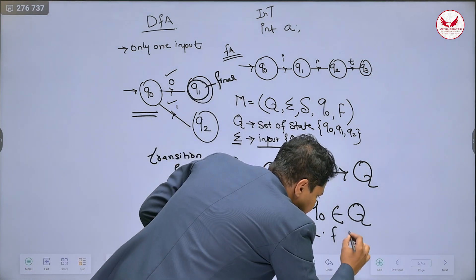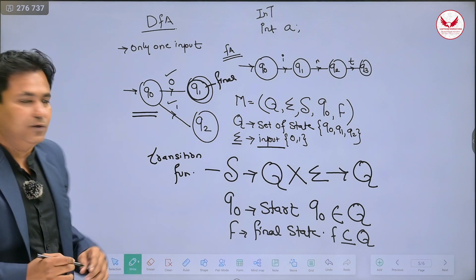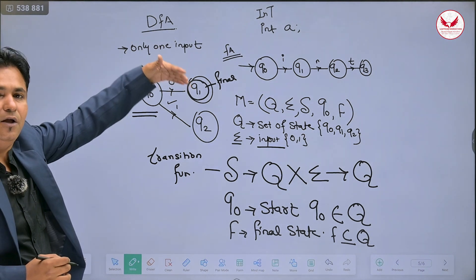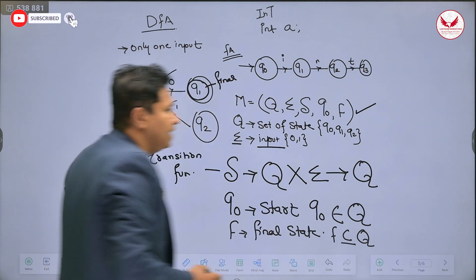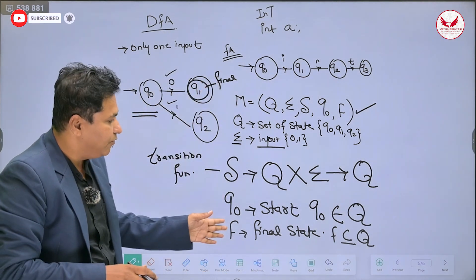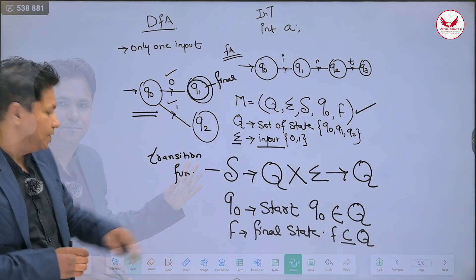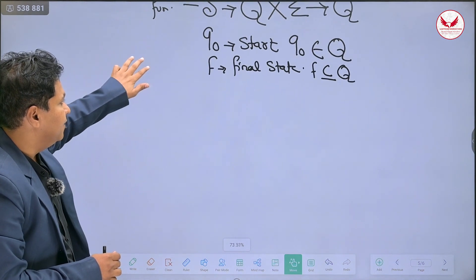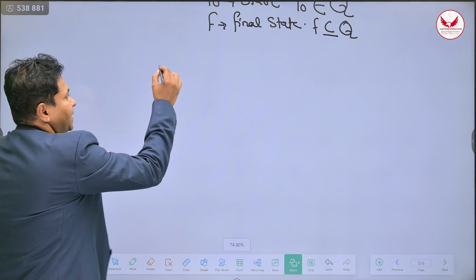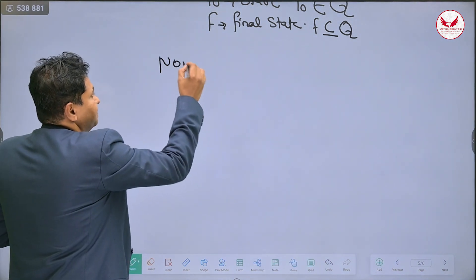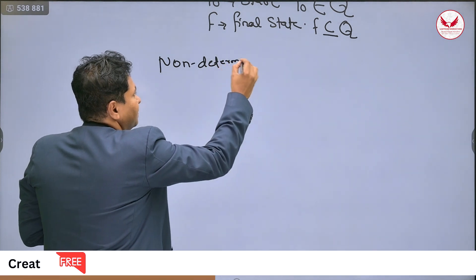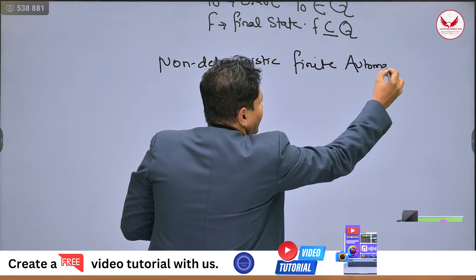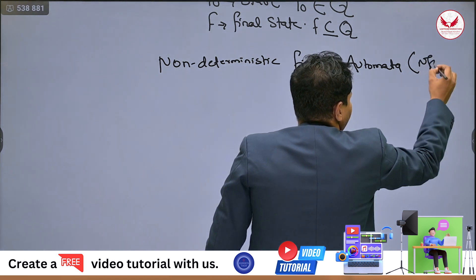The final state F is a subset of Q. So the DFA means that by processing only one input, you can reach the next state. The machine is represented with 5 tuples. Next, we will see NFA — the non-deterministic finite automata.